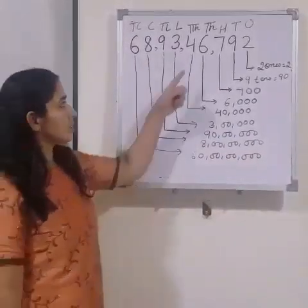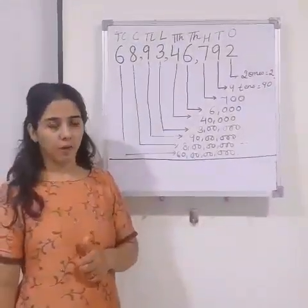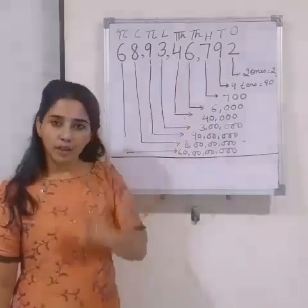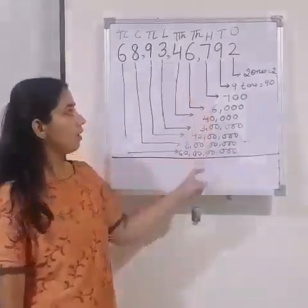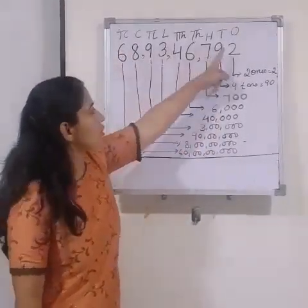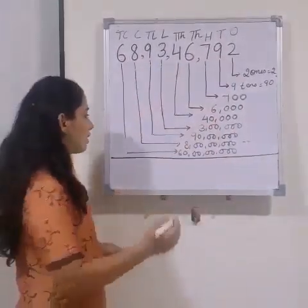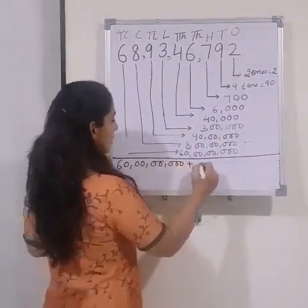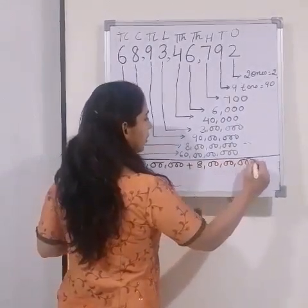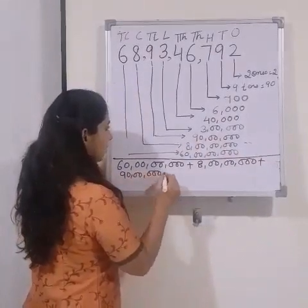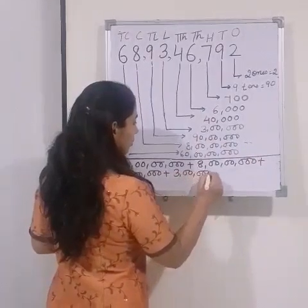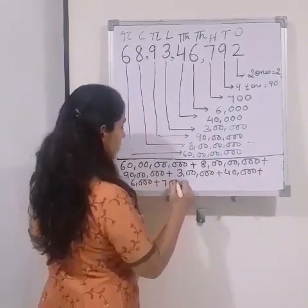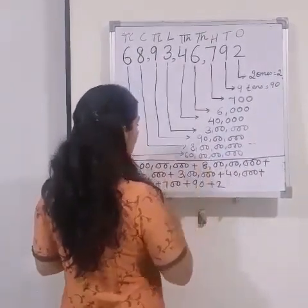This is the way we write the place value of each digit. Now we will see the expanded form. For expanded form there are 3 steps: first, write the number in the place value chart; second, find the place value of each digit; third, write the number as a sum of the place values. So the expanded form is: 60 crore + 8 crore + 90 lakh + 3 lakh + 40,000 + 6,000 + 700 + 90 + 2.